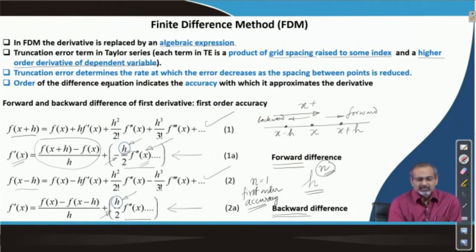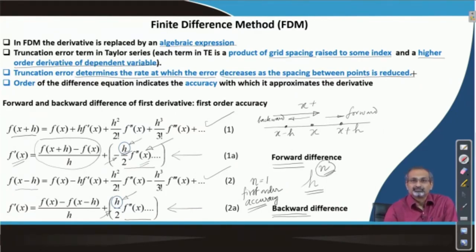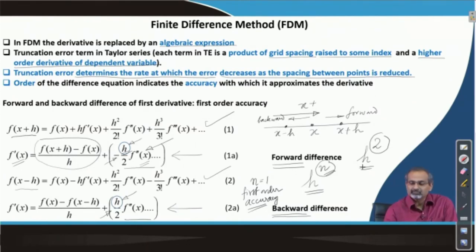Truncation error determines the rate at which error decreases as the spacing between points is reduced. For example, if you make the grid twice as fine in a first order scheme, the error would reduce by a factor of 2. However, if you had a scheme whose leading truncation error term had an index of 2 — that is, an h squared term — then refining the mesh to be twice as fine would reduce the error by 4 times. That is one of the major advantages of going for higher order accurate schemes.